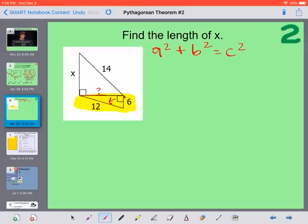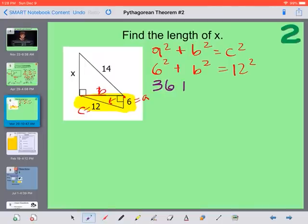So we know opposite of the right angle, that's c. That's our longest side. These sides are a and b. So I'm going to say this is a and this is b. So a is 6. So we have 6 squared plus b squared equals 12 squared. So 6 times 6 is 36. 12 times 12 is 144.